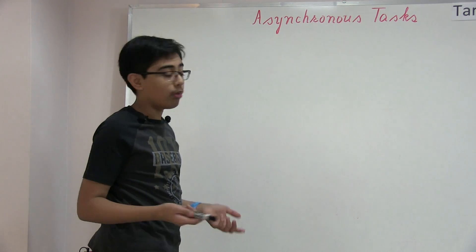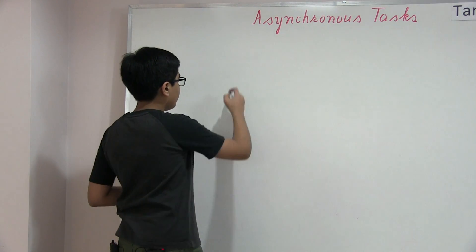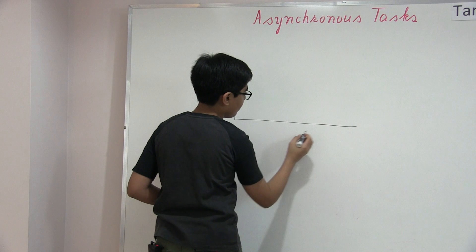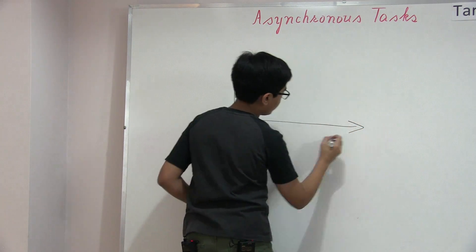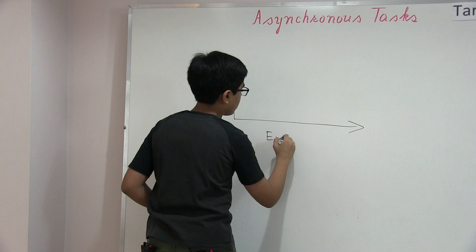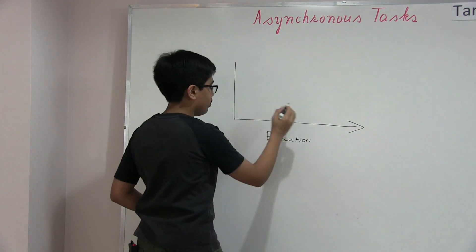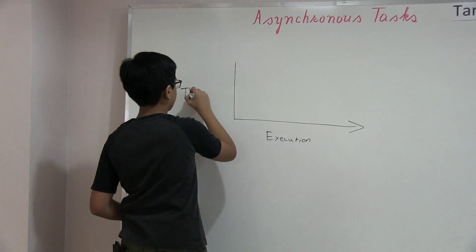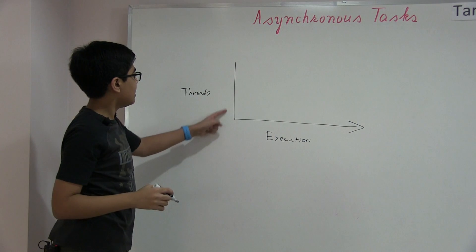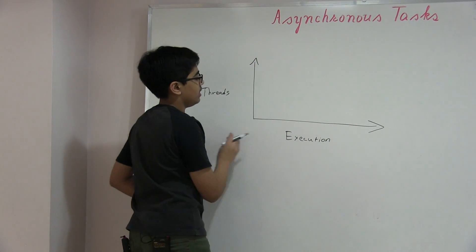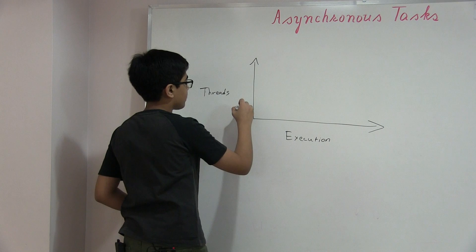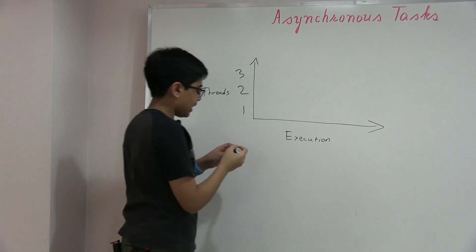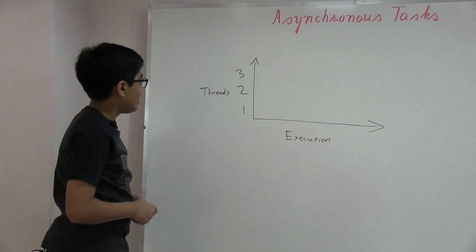What we can actually do is draw a little graph here. This is our execution time as we go along here, a few milliseconds increasing, and over here we've got our threads. I'm just going to draw three threads and continuous execution, but you probably have many more threads.